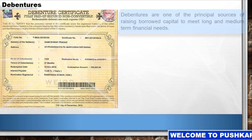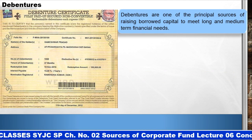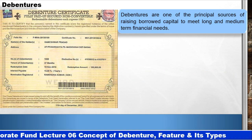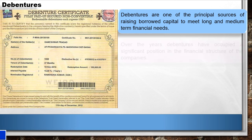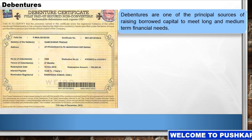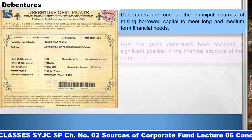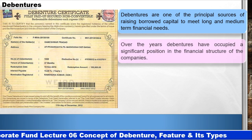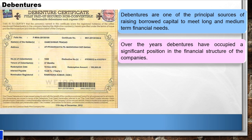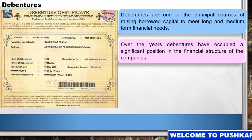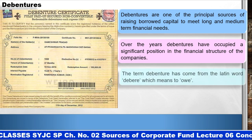Debentures are one of the principal sources of raising borrowed capital to meet long and medium term financial needs. Over the years, debentures have occupied a significant position in the financial structure of companies. The term 'debenture' has come from the Latin word 'devia', which means 'to owe'.